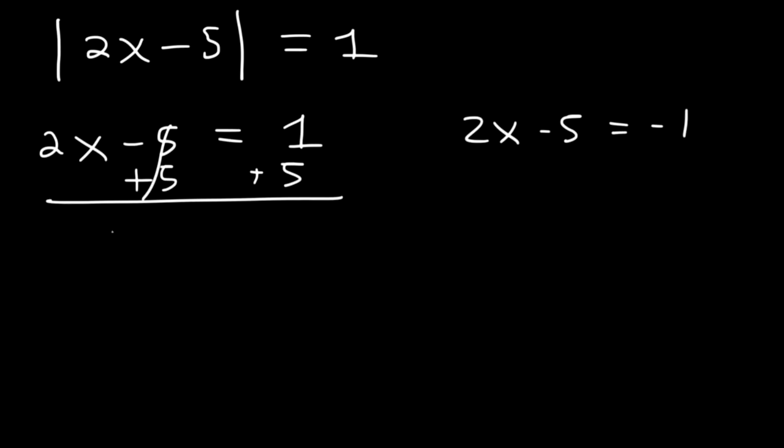Find the value of x given this equation. So just like the last example, let's set 2x minus 5 equal to 1 and negative 1. So first, let's add 5. 1 plus 5 is 6. And then let's divide both sides by 2. So x is equal to 3.